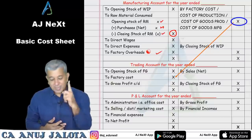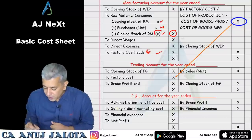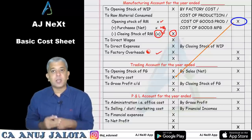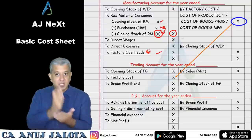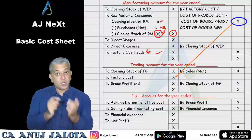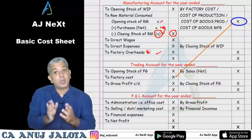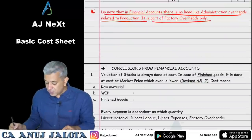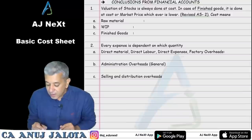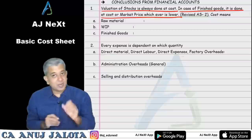Closing stock of raw material is valued at cost — and cost here means purchase cost, as written above. So even in financial accounts, raw material stock is always valued at purchase cost. Valuation of stock is always done at cost. In case of finished goods, it is done at cost or market price whichever is lower. Cost for raw material stock means purchase cost.